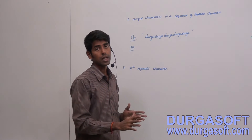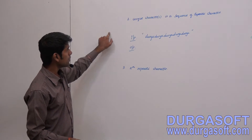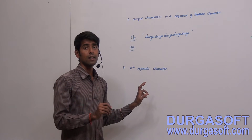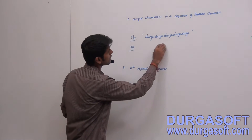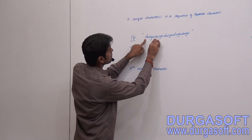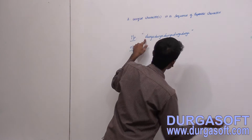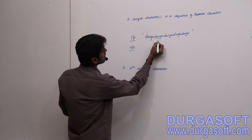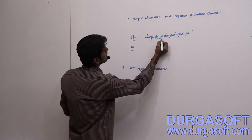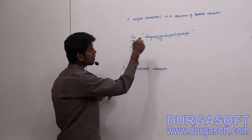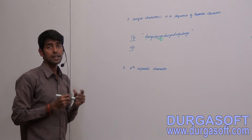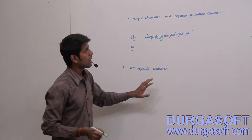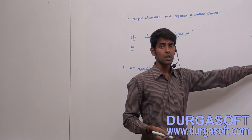In some interviews they might ask you to find the Nth repeated character. For example, what is the fourth repeated character? Here 'd' is the first repeated one, 'u' is the second, 'r' is the third, and 'g' is the fourth. How to find the fourth repeated character — if you analyze it, it becomes very easy.